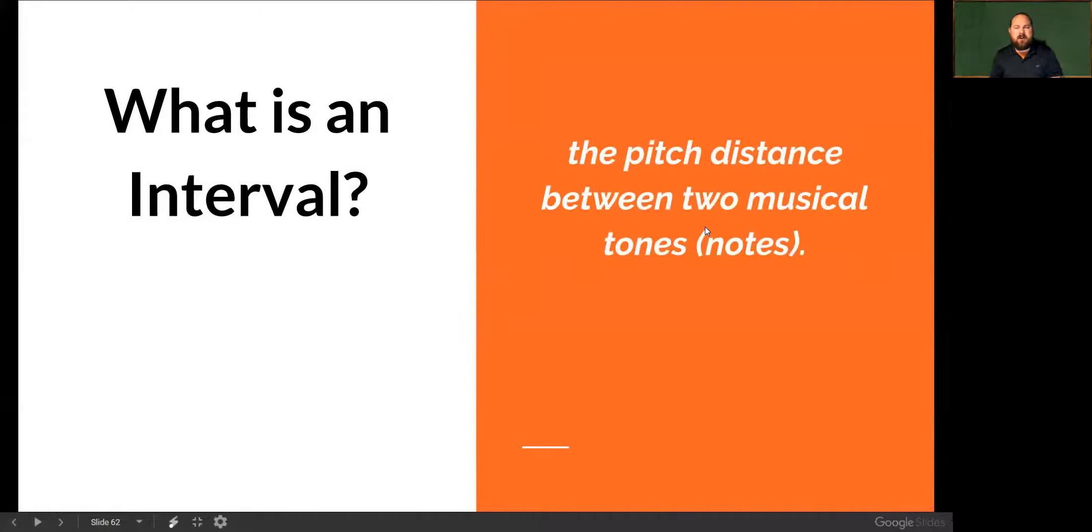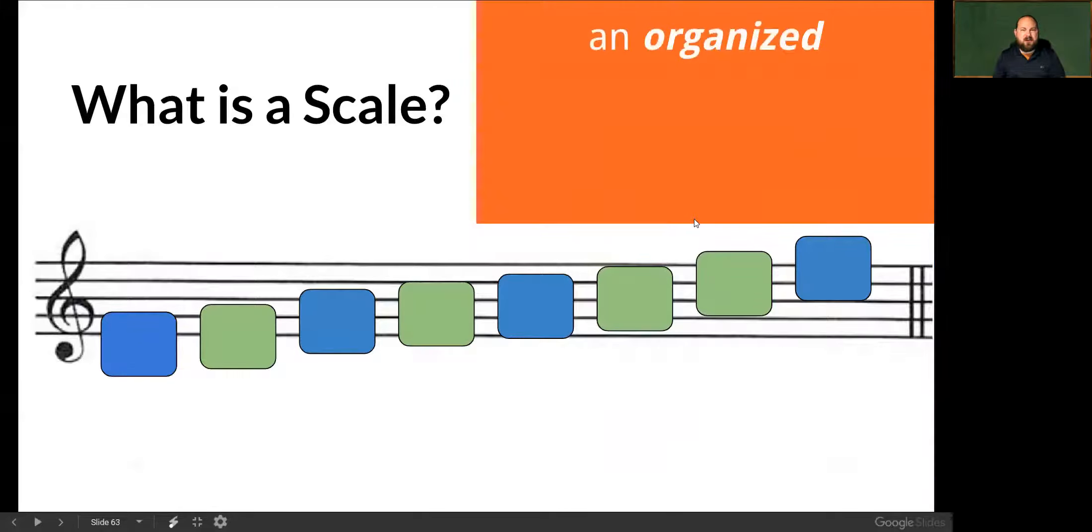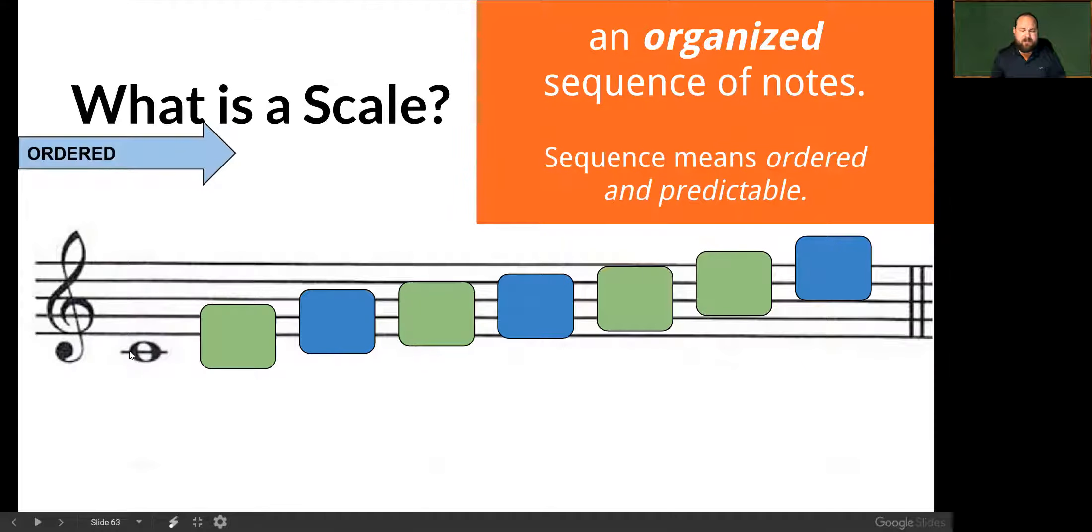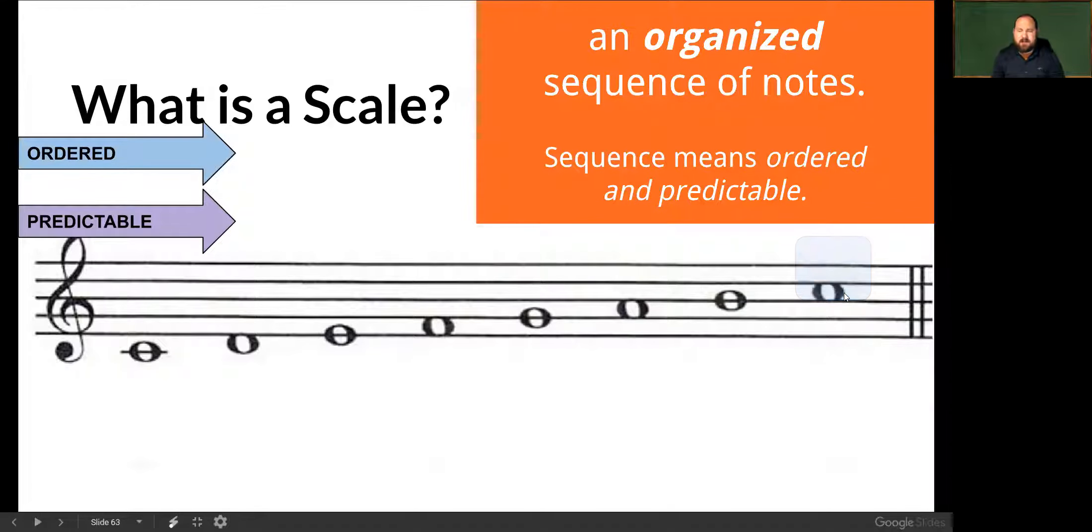And so with that, let's go ahead and just quickly review. An interval is the distance between two pitches. And so here I have two pitches, and I'm looking at what is the distance between those two pitches. Intervals are based on scales. And a scale is just an organized sequence of notes. Sequence means ordered and predictable. And so here I have something going on down here. And let's see that I start on this line note. Eventually, I'm going to have another line note and another line note. But because music is predictable and because we're talking about a sequence of ordered and predictable notes, then I'm going to have a space note between these two line notes. And if I had one space note, then I'm going to have another space note. Line, space, line, space.